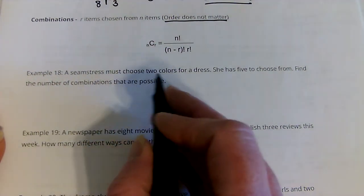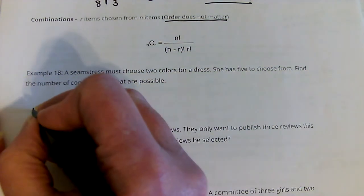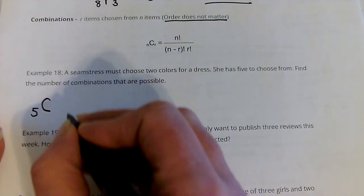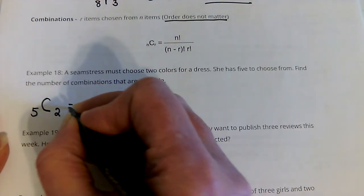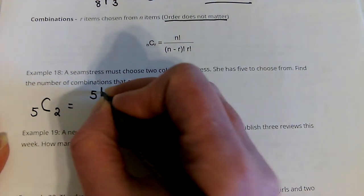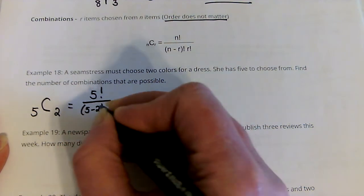So, a seamstress must choose 2 colors for a dress, and she has 5 to choose from. So, we have 5 and we're choosing 2.